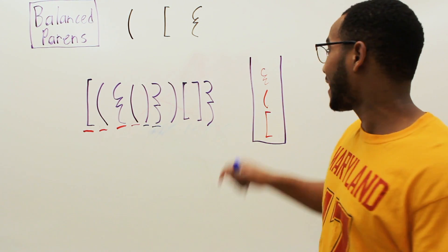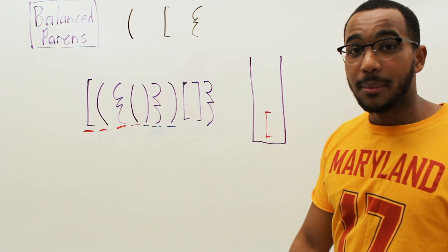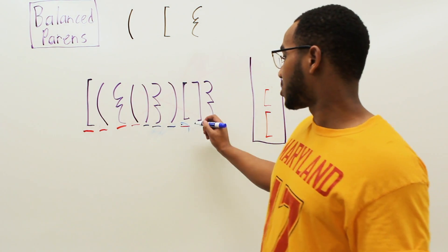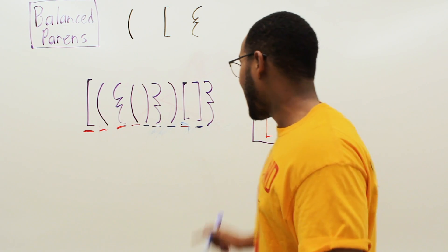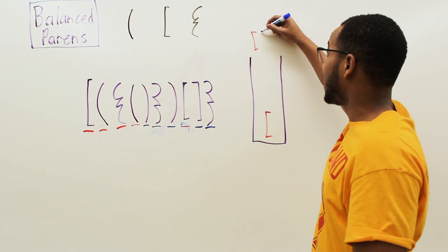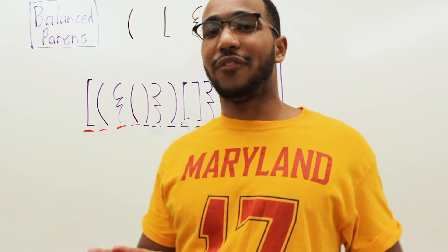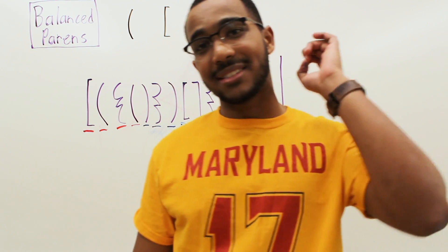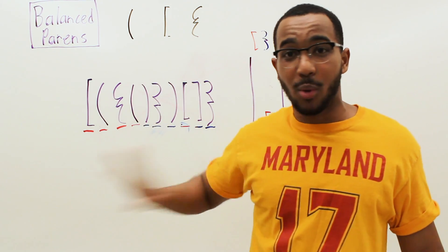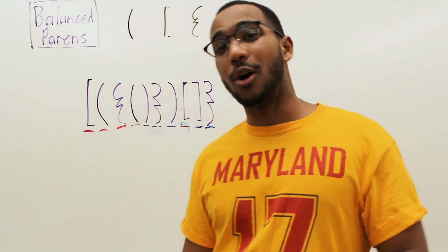We see the next closing, peek the top of the stack — we're fine, pop it. Next closing, check the top — we need to see the matching closing type, we're fine, pop it. Then we see an open, push it. We see a close, peek the top — we're fine. Then we see another close, peek the top — we have a mismatch. We immediately return false, because a closing parentheses is closing one that is not a match to it.